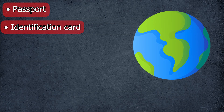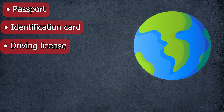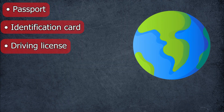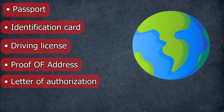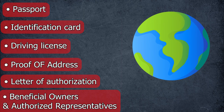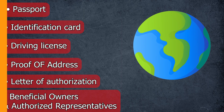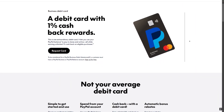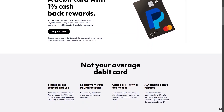According to your region, you'll need to upload extra documents to verify your identity and prove some information about yourself. These documents may include a passport, identification card, driving license, and any document that can prove your address, a letter of authorization, and beneficial owners and authorized representatives.